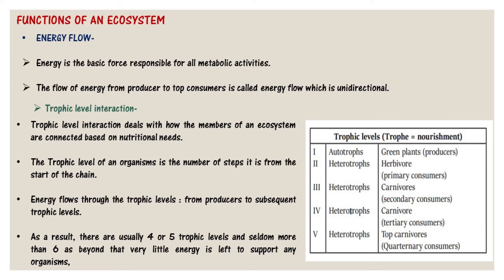Now comes the function of an ecosystem. First is energy flow — how energy flows through an ecosystem — which is the basic driver responsible for all metabolic activities. The flow of energy through an ecosystem is unidirectional — please remember this. Trophic level interaction deals with how the members of an ecosystem are connected based on their nutritional needs, based on the number of steps an organism is from the start of the chain. The flow of energy from producer to consumer is called energy flow, which is unidirectional.